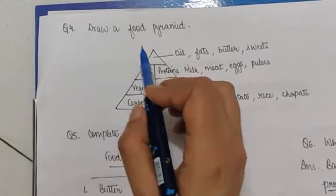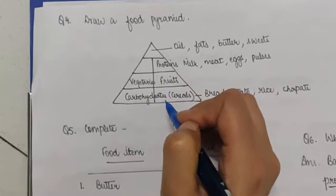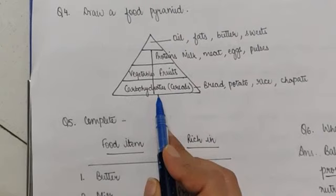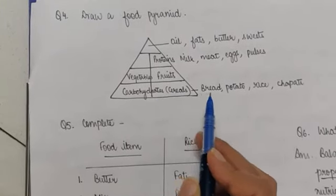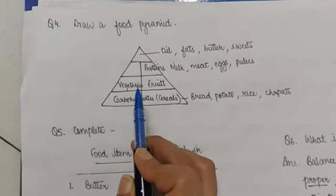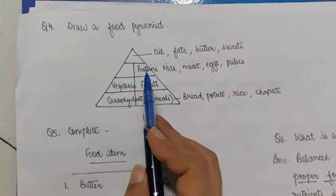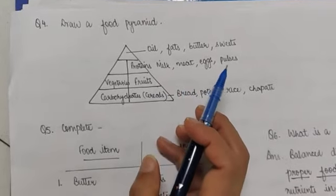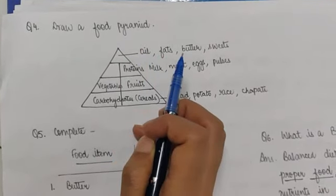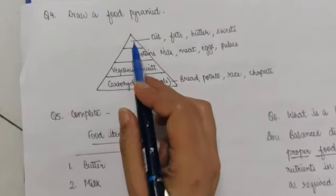Question four: food pyramid. I have told you that we should take all the components in our diet. I have drawn a food pyramid. We should take carbohydrates like bread, potato, rice, chapati. Then, after that, we should take vegetables and fruits. The body should be less than that. Then, the proteins like milk, meat, eggs, daal, etc. We should take the least amount of fat, oil, butter, sweets. You should draw a food pyramid in your notebook.